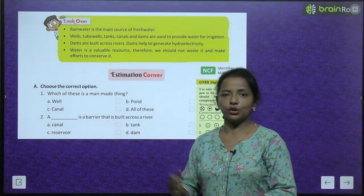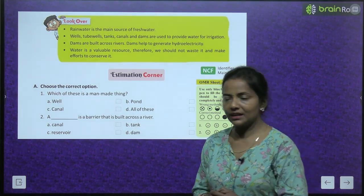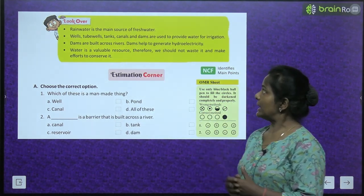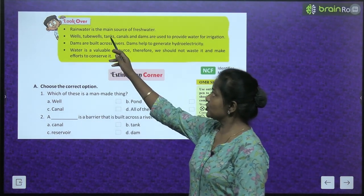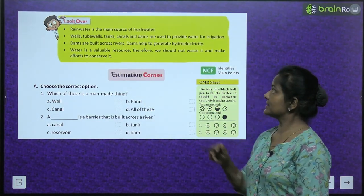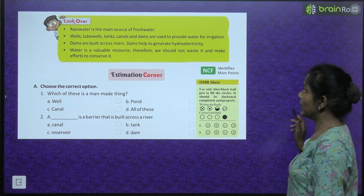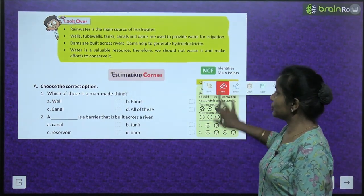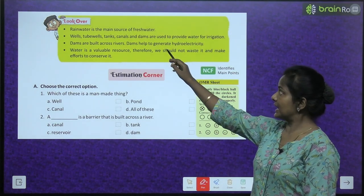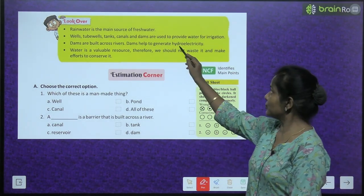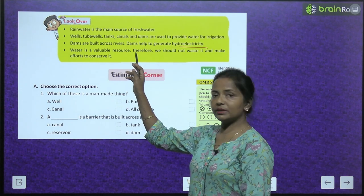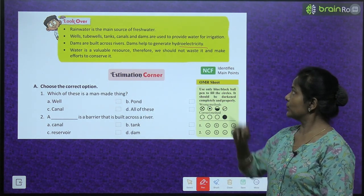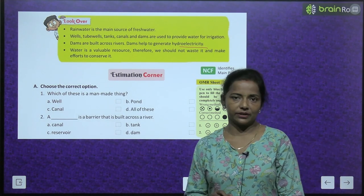A look over — let's go through what we read in this chapter. Rain water is the main source of fresh water. Wells, tube wells, tanks, canals and dams are used to provide water for irrigation. Dams are built across rivers and help to generate hydroelectricity. Water is a valuable resource; therefore, we should not waste it and should make efforts to conserve it.